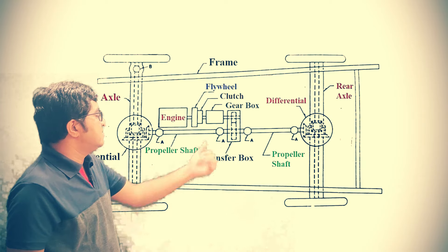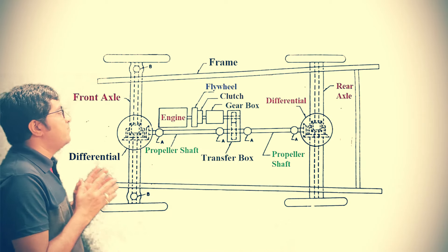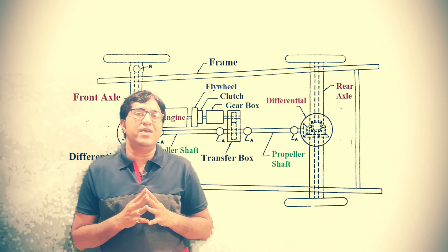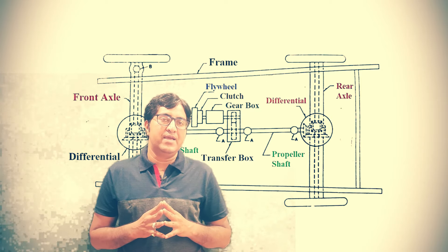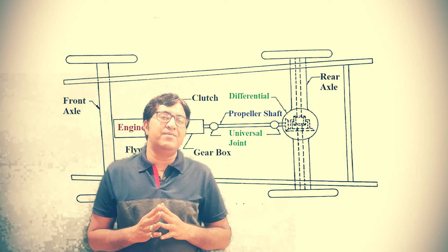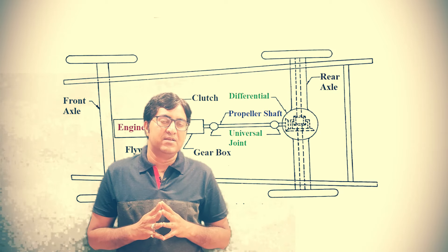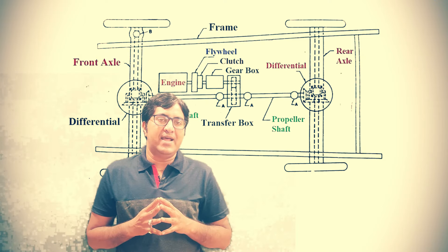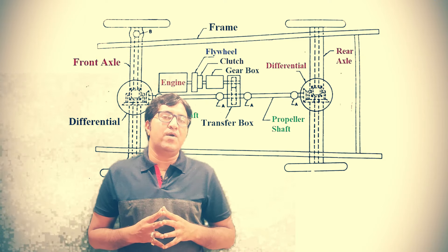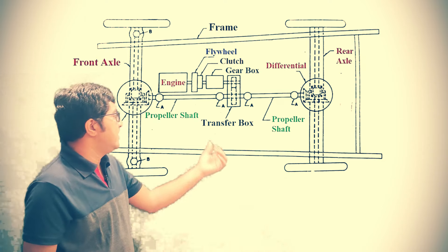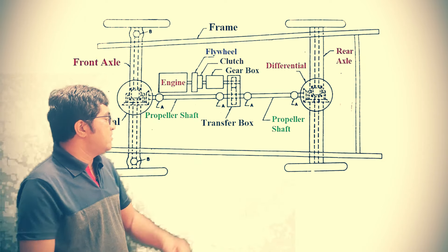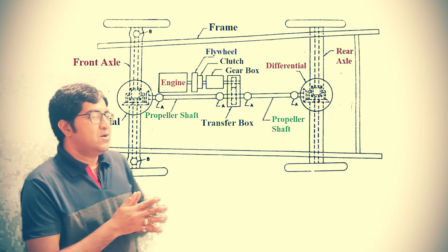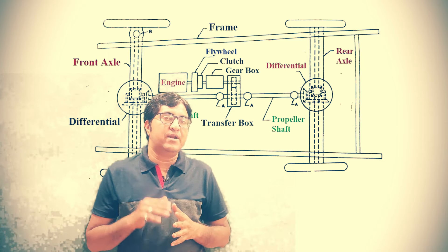The next component is the transfer box. In a four wheel drive, we use two differentials, whereas in a front wheel drive or rear wheel drive, we use only one differential. Whenever we use two differentials, one mechanism is provided in between the two differentials — it is called the transfer box. The function of the transfer box is to convert four wheel drive into rear wheel drive.